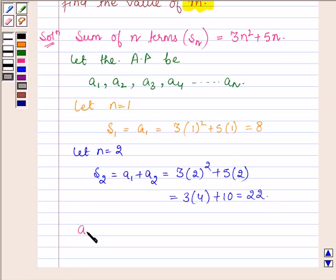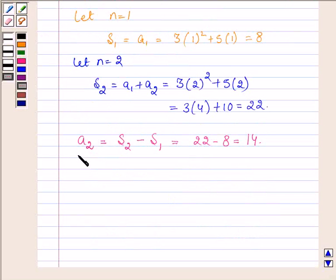To find the a₂ term, we will subtract the sum of first two terms minus S₁. So this is equal to 22 - 8, which gives us 14. Therefore, the second term of the sequence is 14.